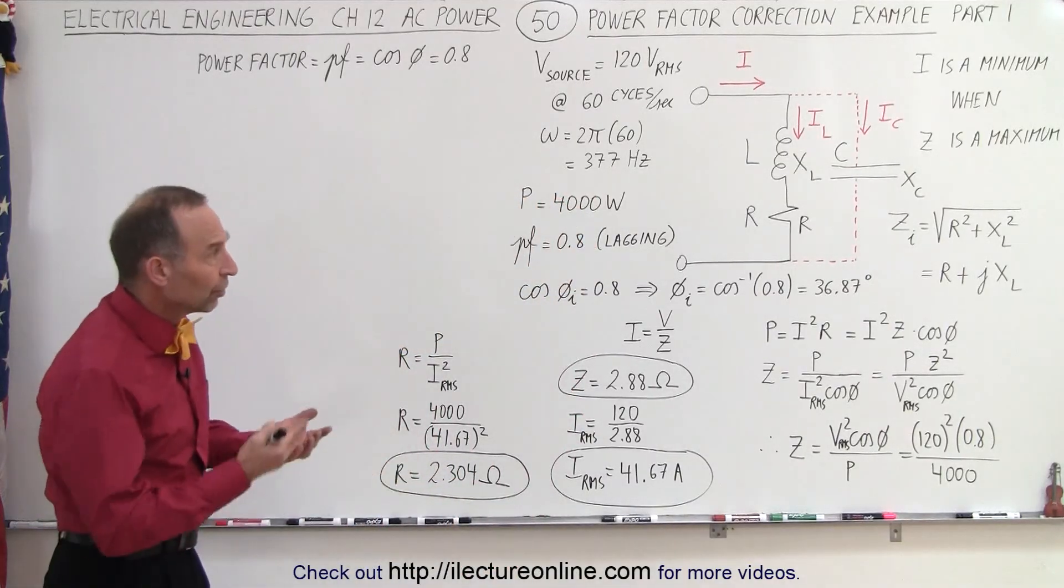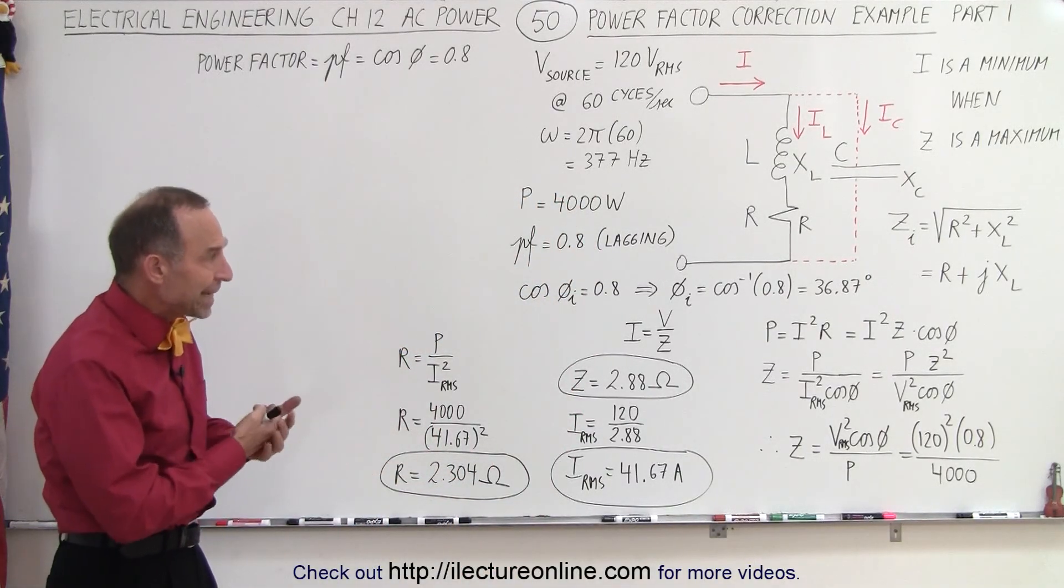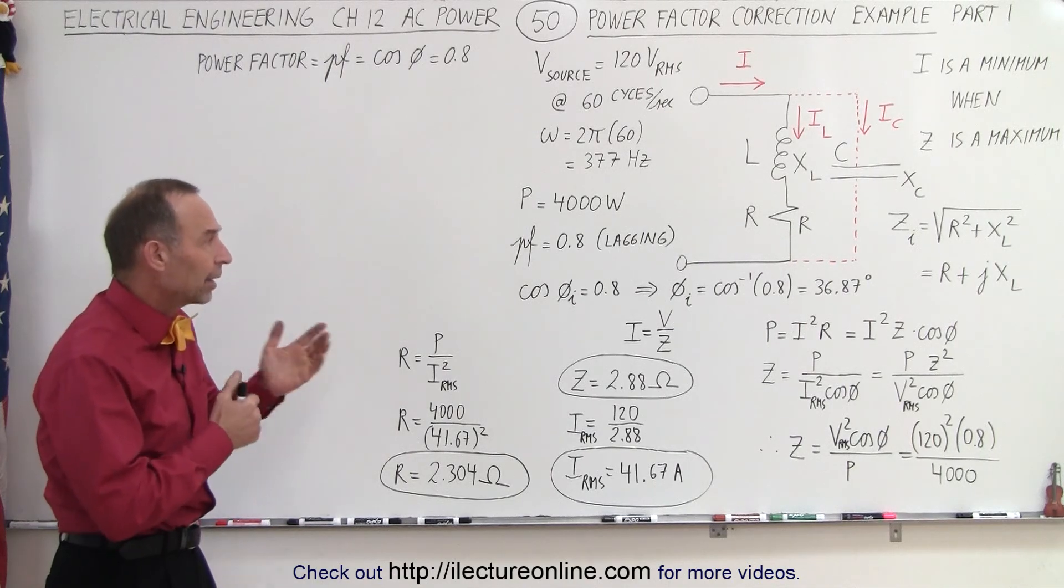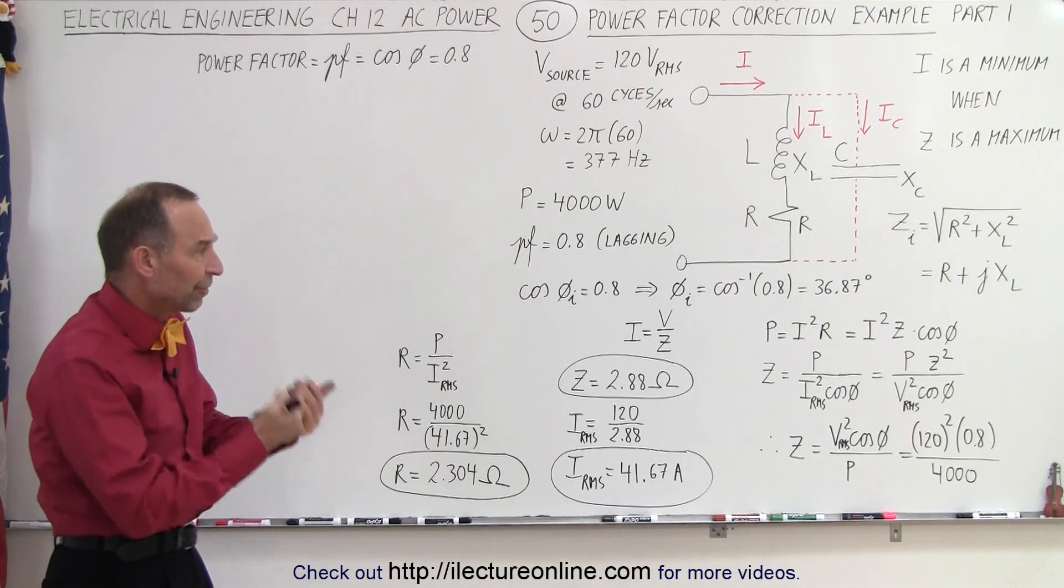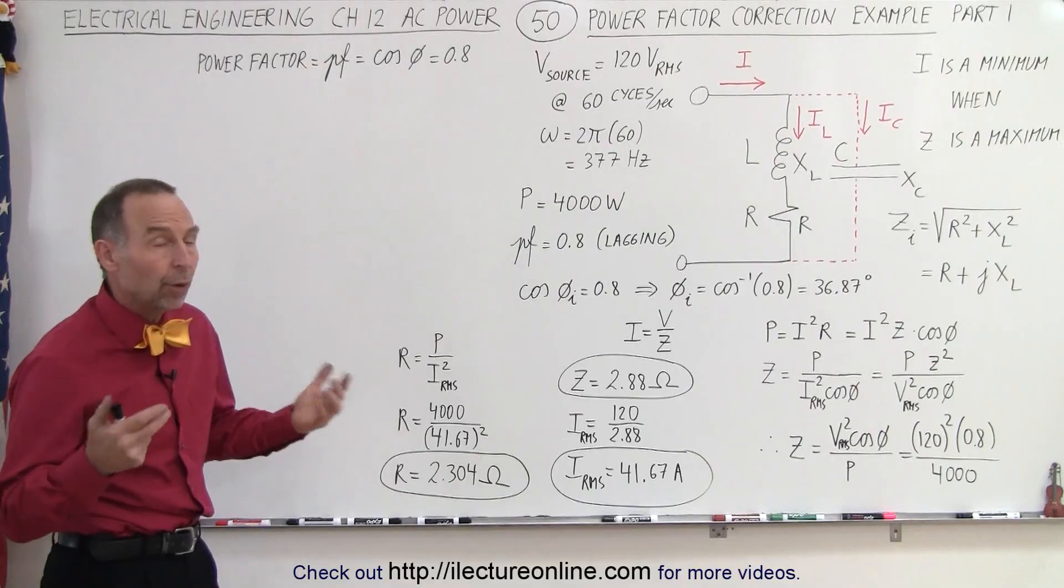And now let's find the resistance, the impedance, and the IRMS, the current provided to the circuit, by using what we know.